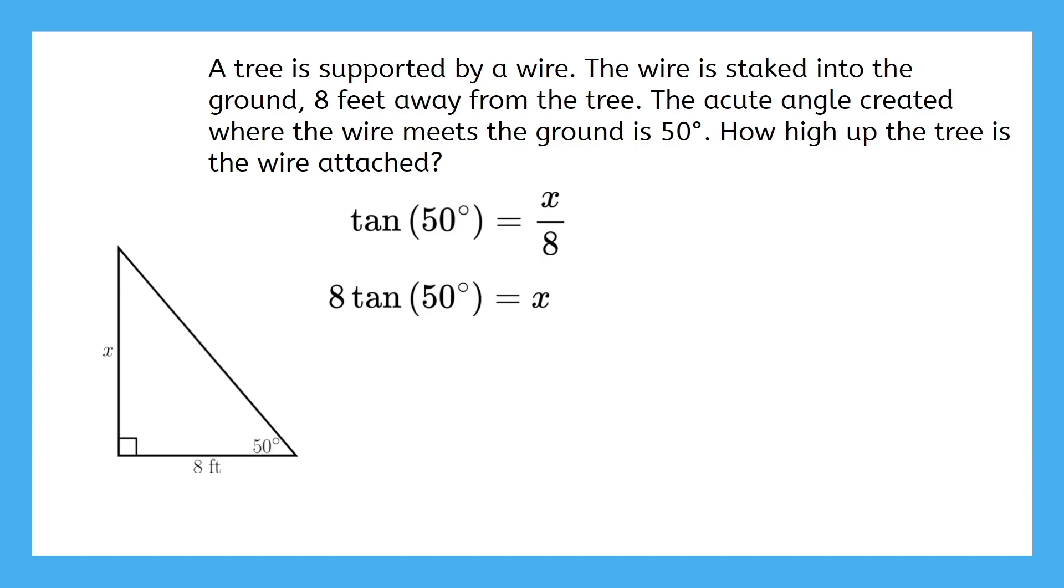This gives us the exact answer, but it'll make more sense to find a rounded number. Let's be real, no one's gonna know what you mean when you say that the distance is 8 tangent of 50 degrees. So, we use our calculator to find a decimal approximation. Let's go ahead and round our answer to the nearest hundredth.